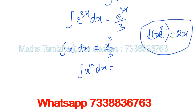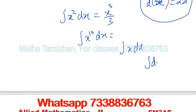Good. One more: integral of x dx — that is x power 1, so adding 1 gives x squared divided by 2. So the integral of x is x squared by 2. And integral dx — that is just x.